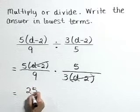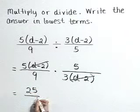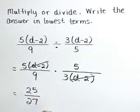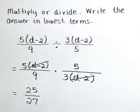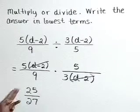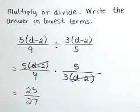5 times 5 is 25. And in the denominator, 9 times 3 is 27. That is a reduced fraction. And therefore our answer in lowest terms is 25 27ths.